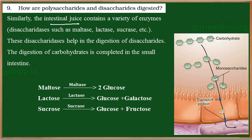The intestinal juice, secreted by the small intestine, contains enzymes which break the disaccharides. These enzymes are maltase, lactase, and sucrase. They act upon the disaccharides and break the bonds, releasing the monosaccharides, which are then taken into the lymphatic vessels and transported to the various parts of the body.